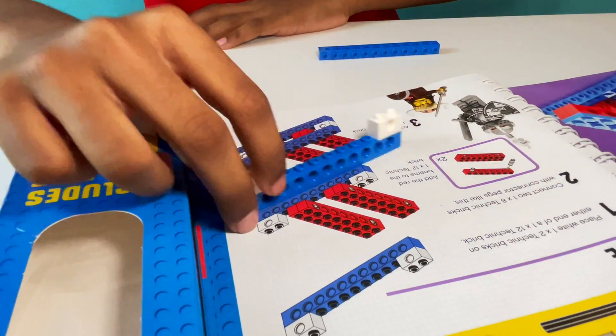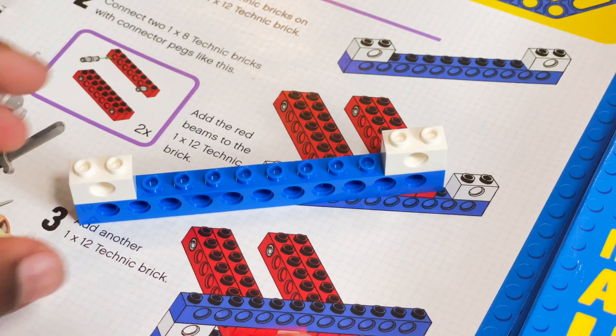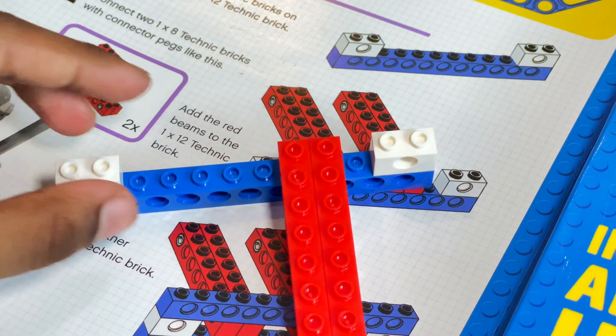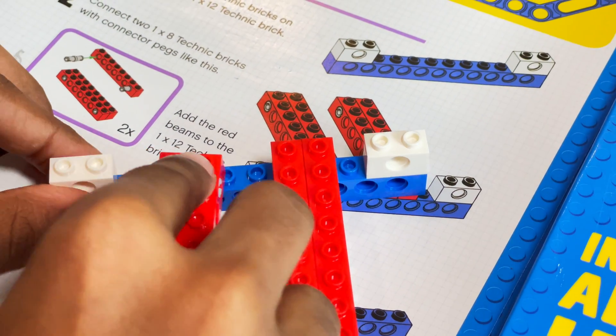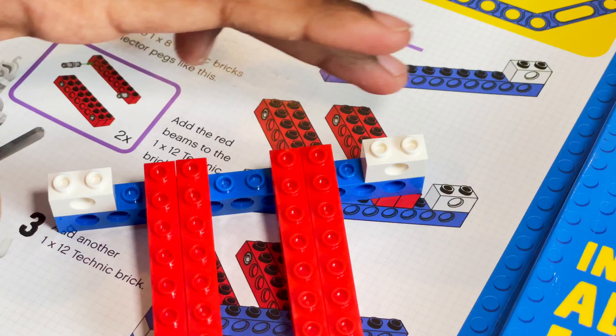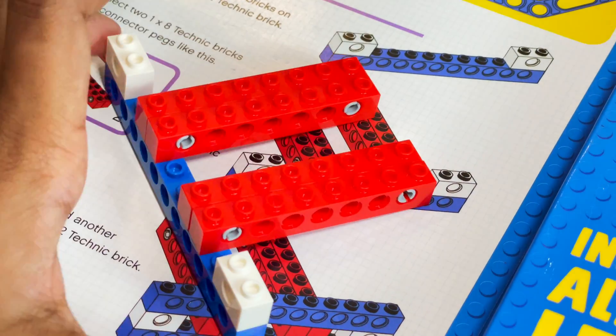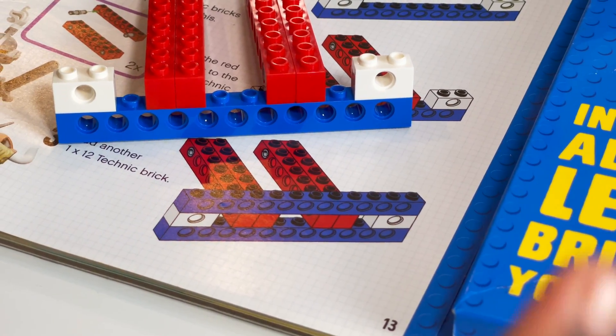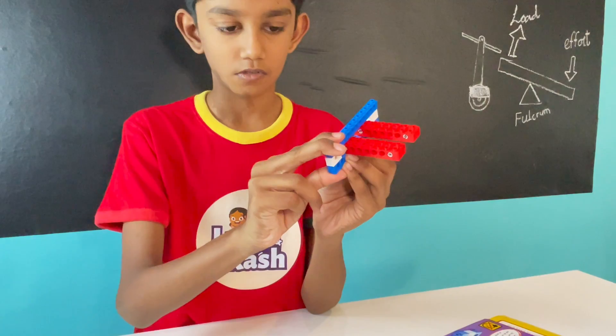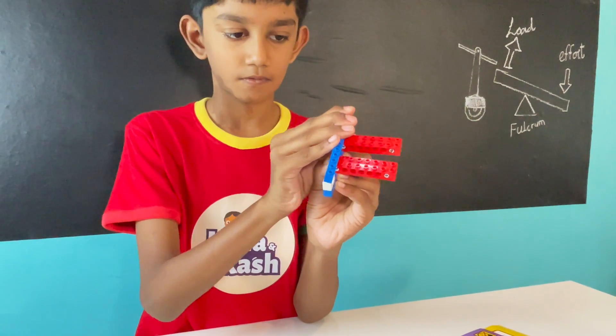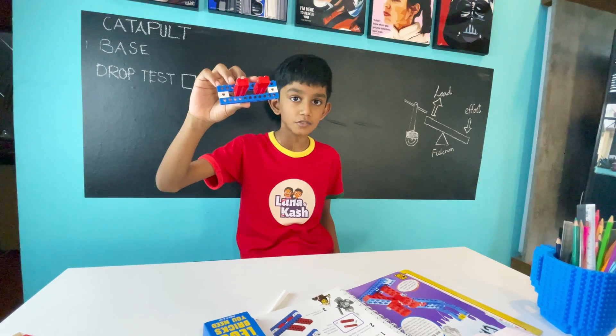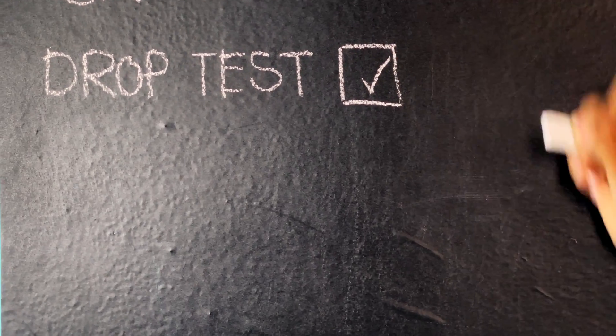Now we add the beams to the base. Next, securing the assembly, just like this. Base drop test. Pass. Next, I'm going to attach the axle.